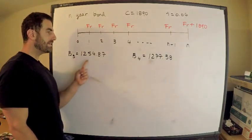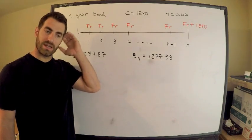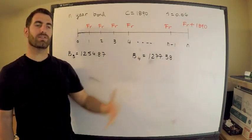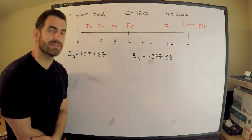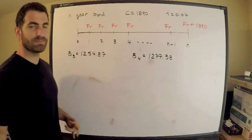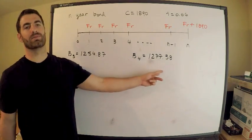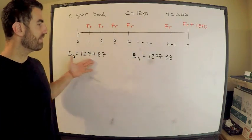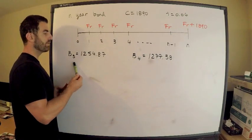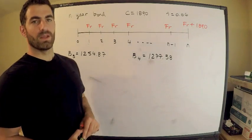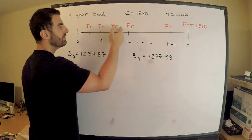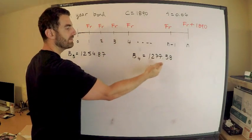This is a write-up situation. The bond is purchased at a discount because the book value is increasing toward the redemption value of 1890. The relationship between book value at year three and year four is that BV₃ accumulates at the effective rate and then a coupon payment is subtracted, yielding BV₄.